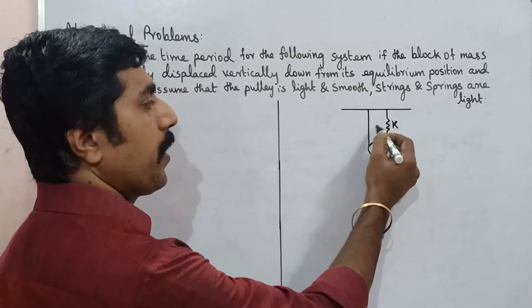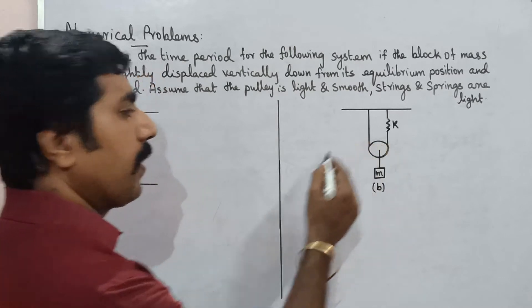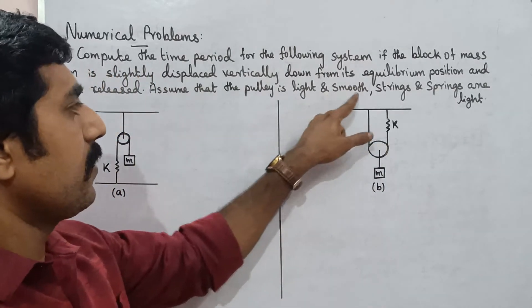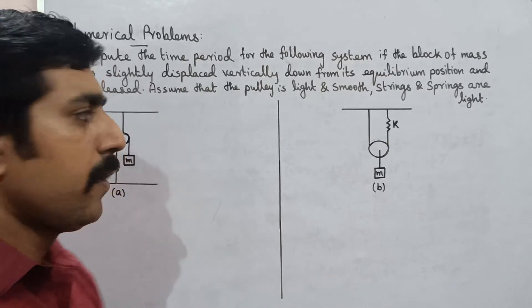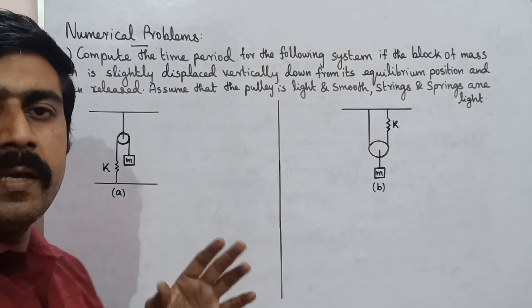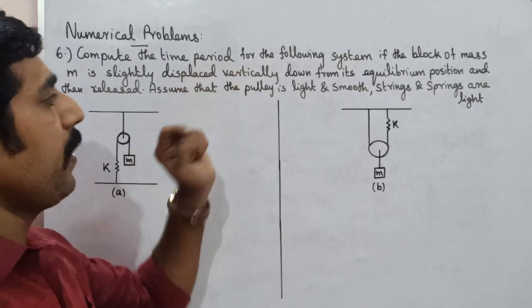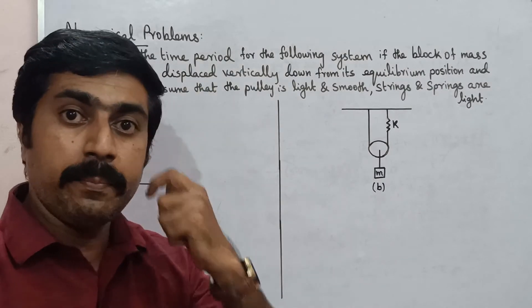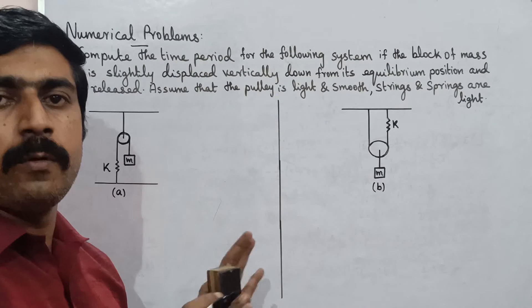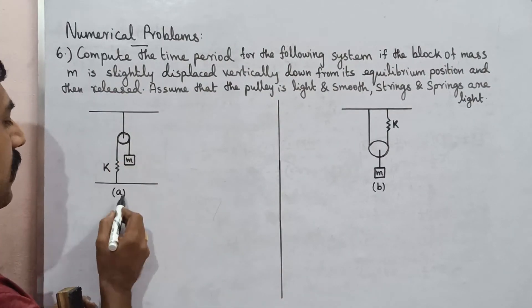The system has: spring one, spring two (both light), and one pulley (light and smooth). So this system consists of a mass, string, and spring. We need to calculate the time period. The block is vertically displaced. This is the mass of the block. This is Case A.